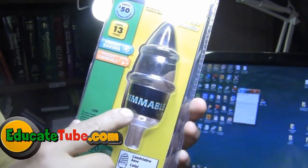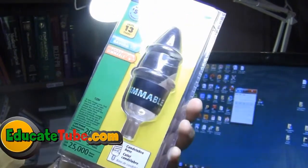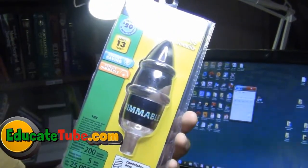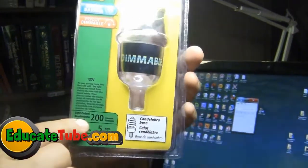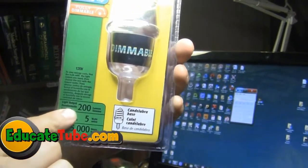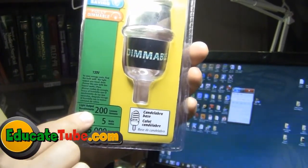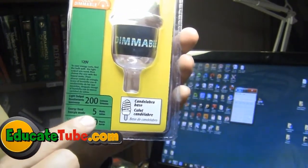Apparently, this compact fluorescent light bulb is dimmable, so in other words, you can turn it brighter or less brighter. It has a brightness of 200 lumens, which is equivalent to a 25 watt incandescent light in terms of brightness. Again, only uses 5 watts.